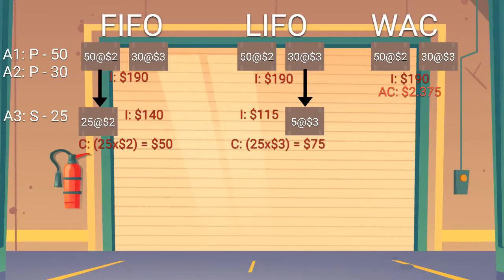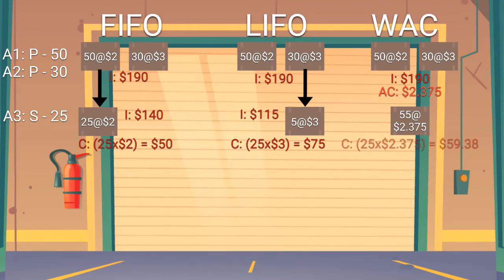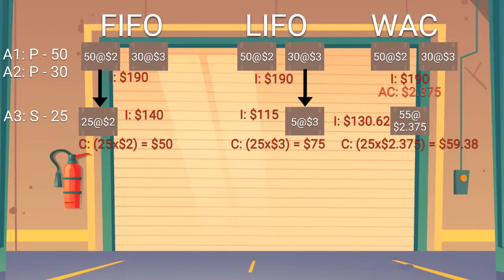That's quite a big difference in cost and inventory balance compared to FIFO. For the WAC method, each item sold has an average cost of $2.375, so that equates to a cost of goods sold of approximately $59.38 and an inventory balance of approximately $130.62. That average cost of $2.375 stays the same for the remaining 55 units of inventory.